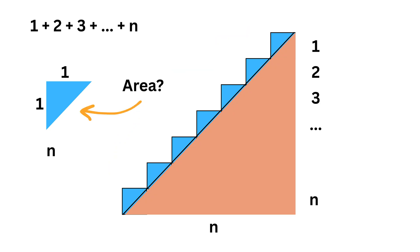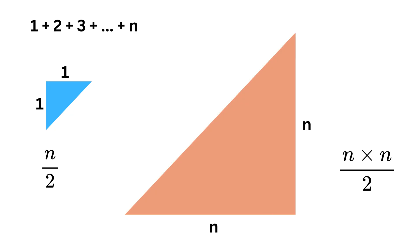Now what will be the area of this one small triangle? It will be one times one by two or half, right? So the area of all these n small triangles will be n times half or n by two. Now this big triangle has side length n and n and thus its area will be equal to n times n by two. So the total area equals n by two plus n times n by two.